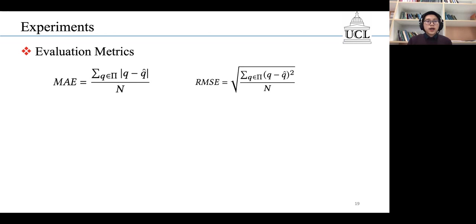We adopted the MAE and RMSE as the evaluation metrics. Both metrics are sensitive to outliers. Here, Q denotes the ground truth and Q-hat denotes the prediction.